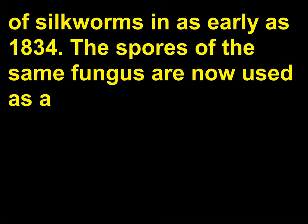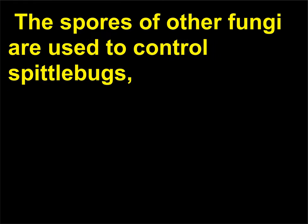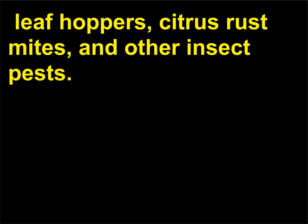The spores of the same fungus are now used as a mycoinsecticide — a parasitic fungus used to kill insects — to control Colorado potato beetles. The spores of other fungi are used to control spittle bugs, leafhoppers, citrus rust mites, and other insect pests.